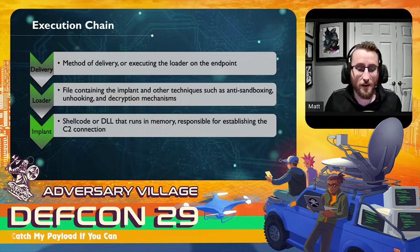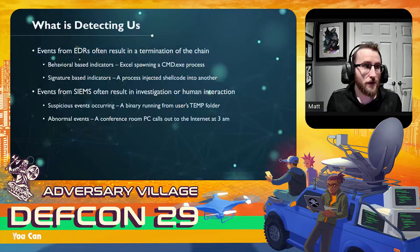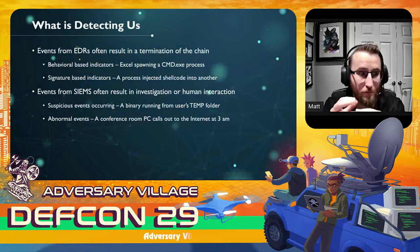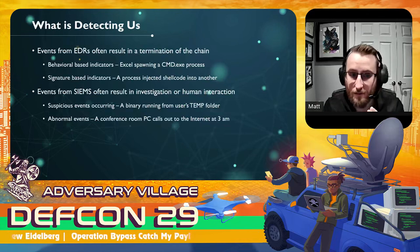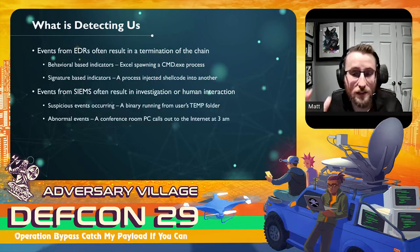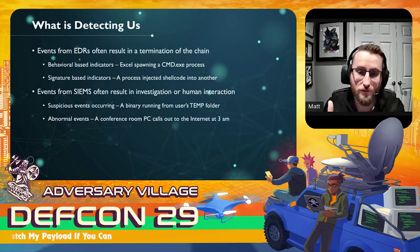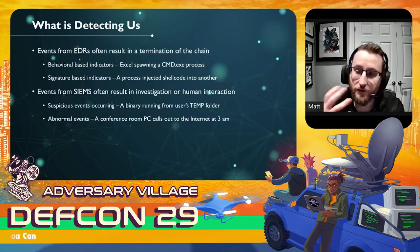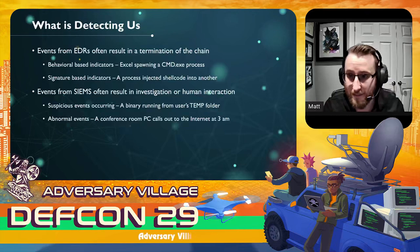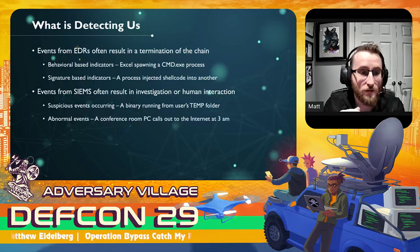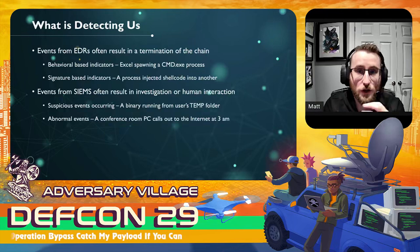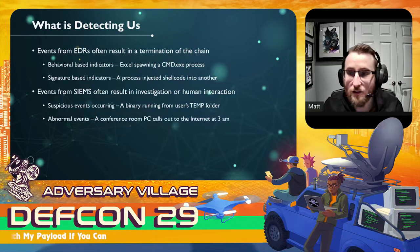Once we have these three things defined, we need to understand what's detecting us. I like to break it down into two things: behavioral, which is really coming down to EDRs — they like to focus on behavioral indicators. The example is YXSL spawning cmd.exe — that's a behavioral thing. But there's also signature-based detection, such as historical antivirus agents, which still comes into play when detecting things like large block strings of base64 or shellcode.